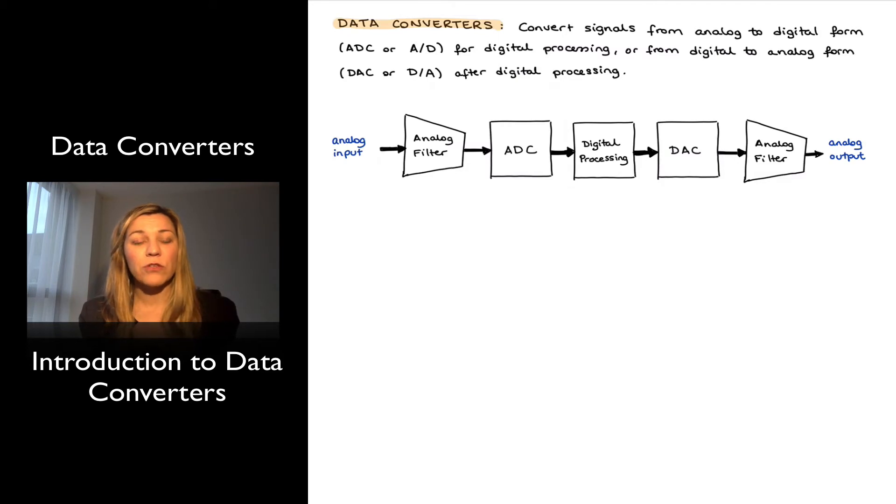Before we move into studying different configurations and topologies for both ADCs and DACs, we're going to take a look at what a generic digital processing system looks like, and specifically the data conversion portions at the input and at the output. We'll also define some key terminology that we're going to be using and that is required to understand the performance and operation of both ADCs and DACs.